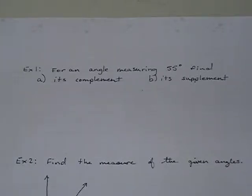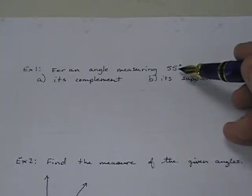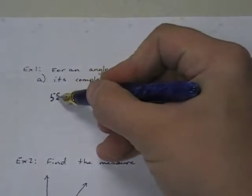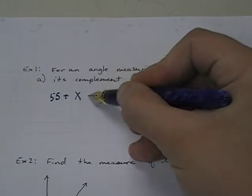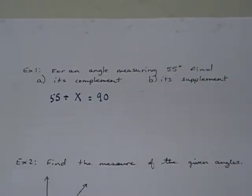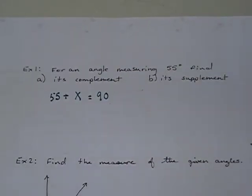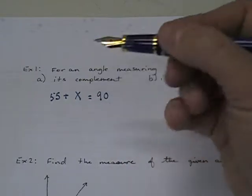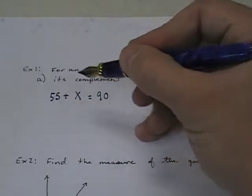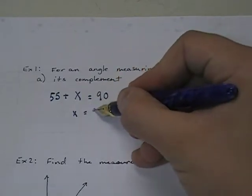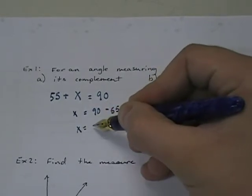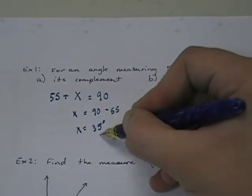It's two angles that add up to 90 degrees. So if I want to find the complement of 55 degrees, I can write an equation: 55 + x = 90. And then I can solve that equation for x simply by removing 55 from both sides. So a little bit of algebra review here too. So I end up with x = 90 - 55, and of course x = 35 degrees.